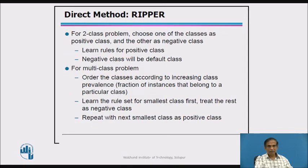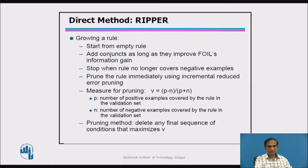In RIPPER, for a two-class problem, one class is chosen as positive and the other as negative. Rules are learned for the positive class, and the negative class becomes the default. This approach also extends to multiple class problems where many ordered classes exist, and you learn from these classes, repeating with the next smallest class as the positive class.